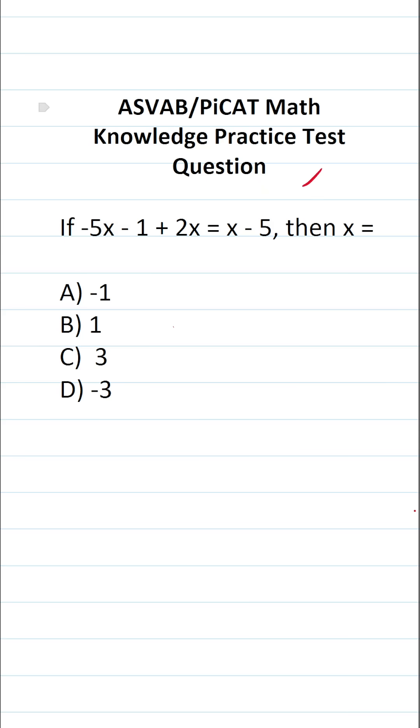So in this case, we want to solve this equation for x. That is to say, we want to get x equal to something by itself. Now, on the actual ASVAB and PICAT, you're not given a reference sheet or a calculator.